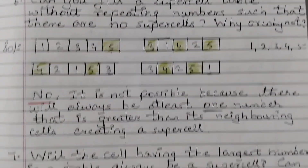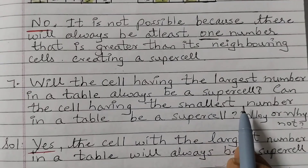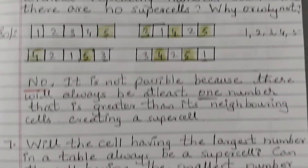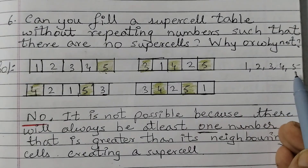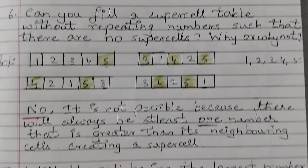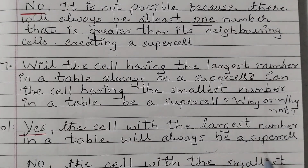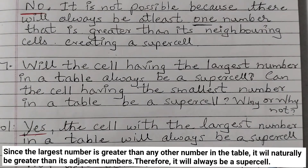Question number 7 is an extension of this. Will the cell having the largest number in a table always be a supercell? If you see here the largest number is 5, and 5 is the largest number and it is a supercell in all of the cells. So the answer is yes — the cell with the largest number will always be a supercell, since the largest number is greater than any other number in the table, it will naturally be greater than its adjacent numbers, and therefore will always be a supercell.